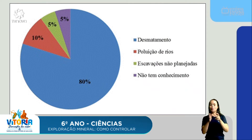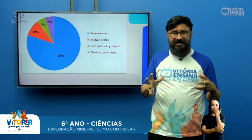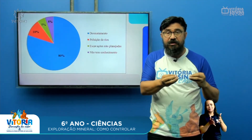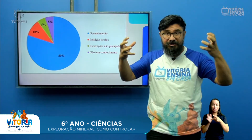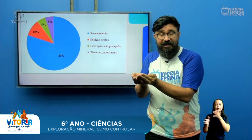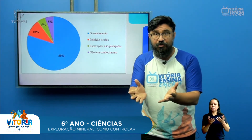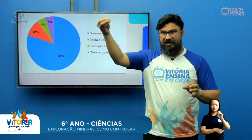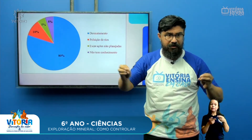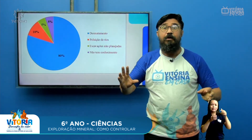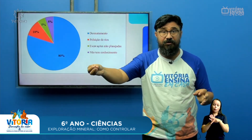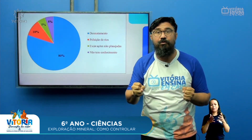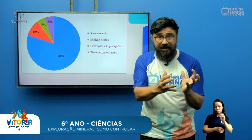Quando a gente fala de desmatamento, lembre-se que vai ter um efeito dominó: vai causar problemas que vão envolver desde o próprio regime de chuva até causar problemas na oferta hídrica dos rios por causa do processo de assoreamento e muitos outros pontos. A gente falou do comprometimento da chuva, comprometimento dos rios — o próprio problema do aquecimento global também está intimamente associado ao processo de desmatamento, sequestro de carbono. Você percebe que tudo isso está o tempo todo dialogando.